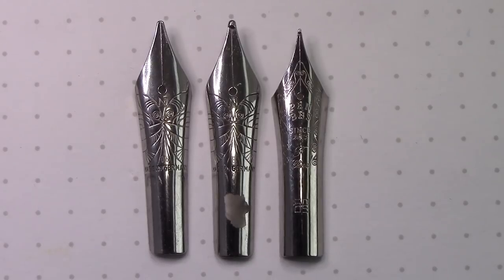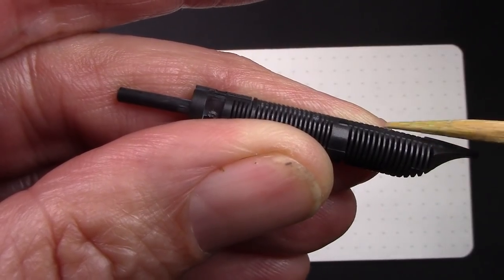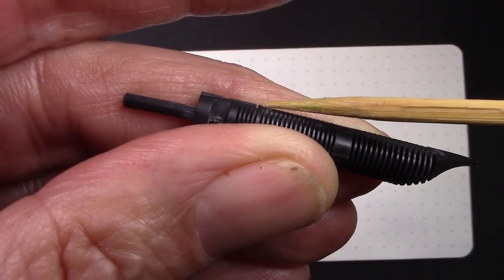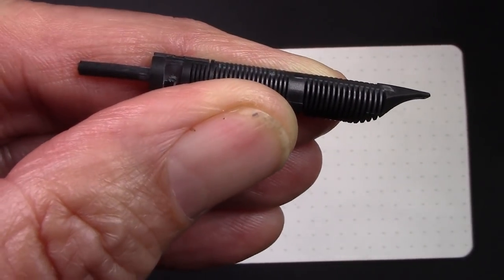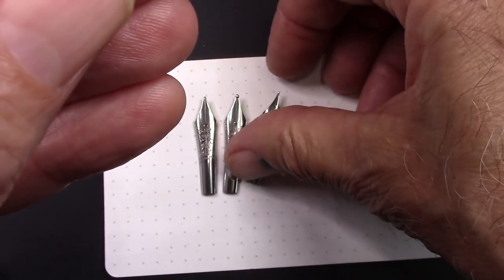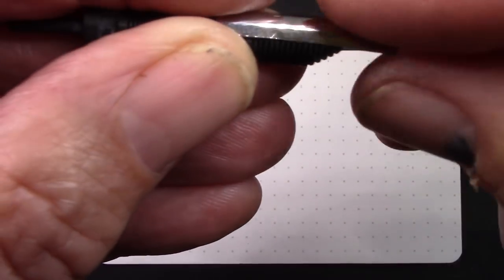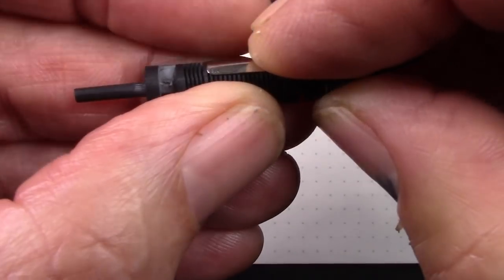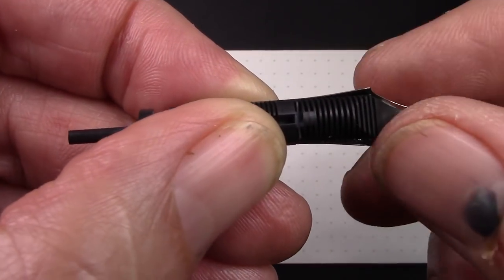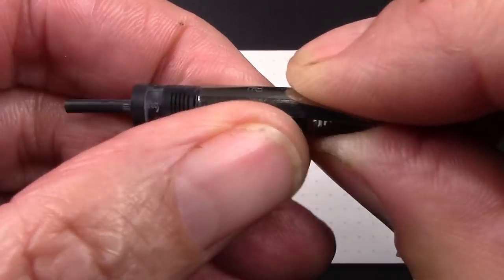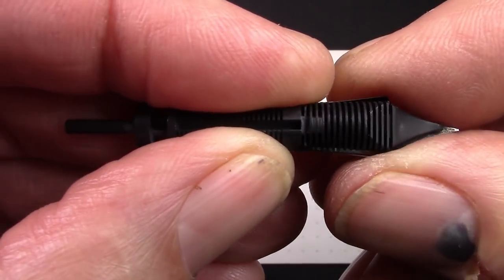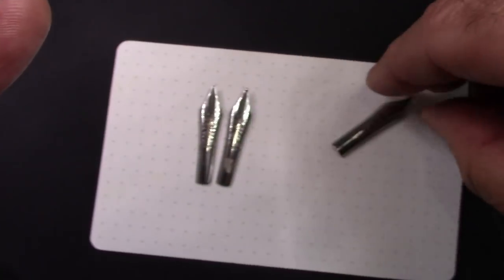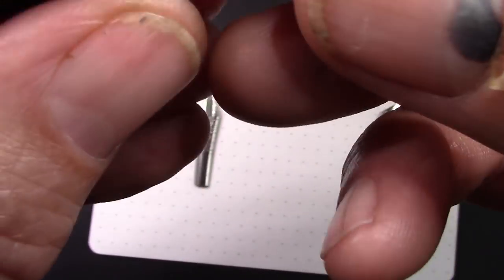One of the other things that impact putting a nib is the feed. This is the PenBBS feed. What it is, there's a hard stop right here, so when you place the nib on the feed, it stops right there. You're always going to get good alignment, good placement. But the challenge you get is the PenBBS nib is about a millimeter shorter than the Nemosine nib.